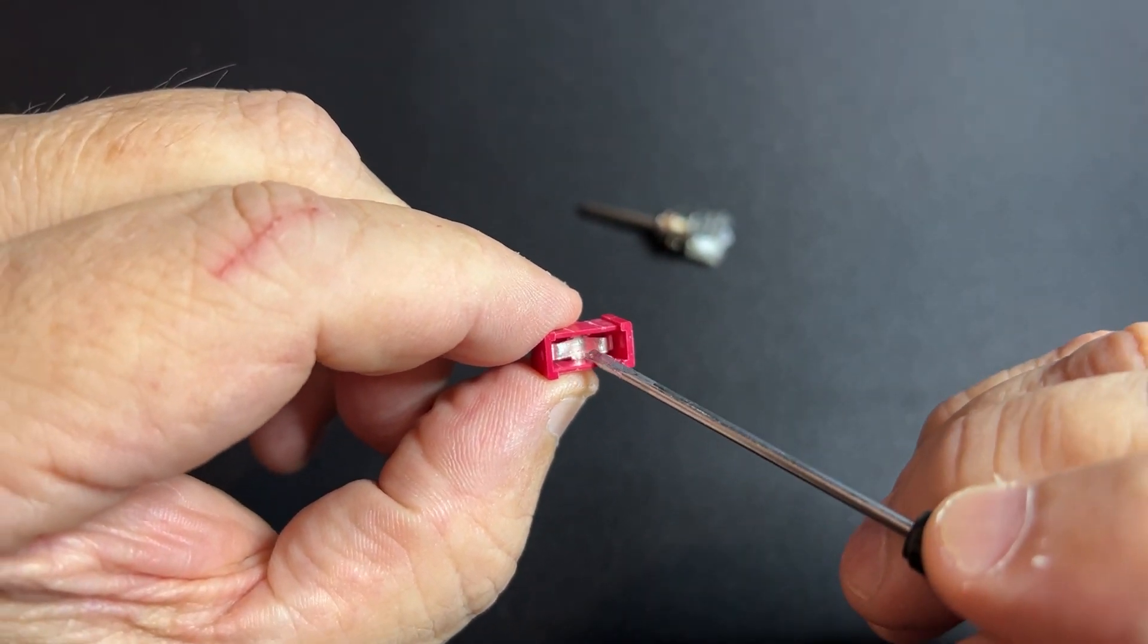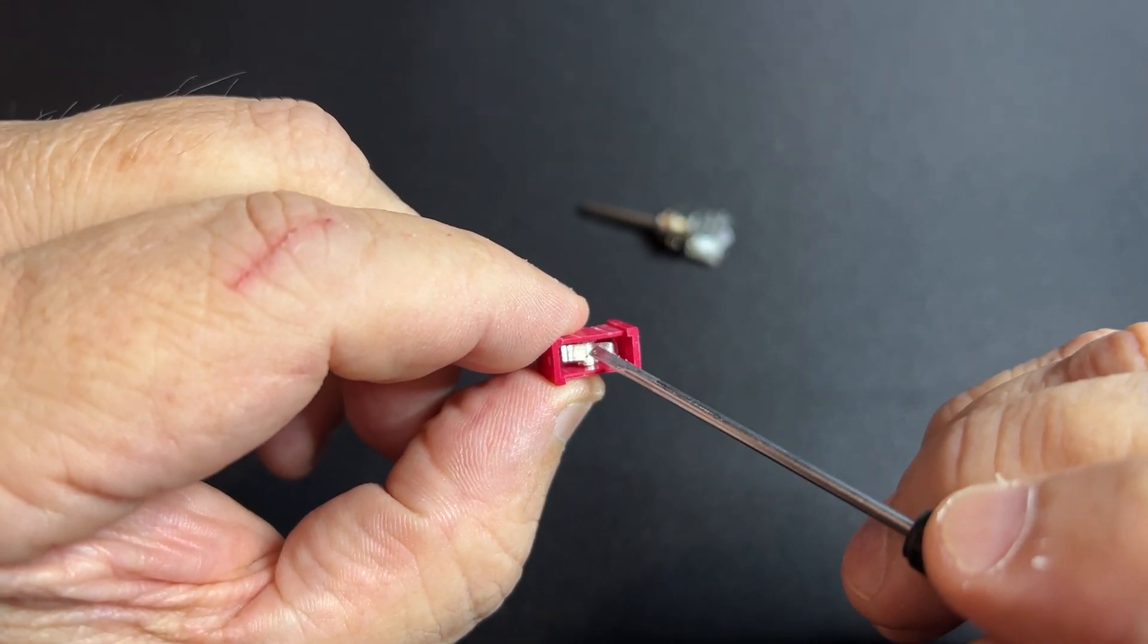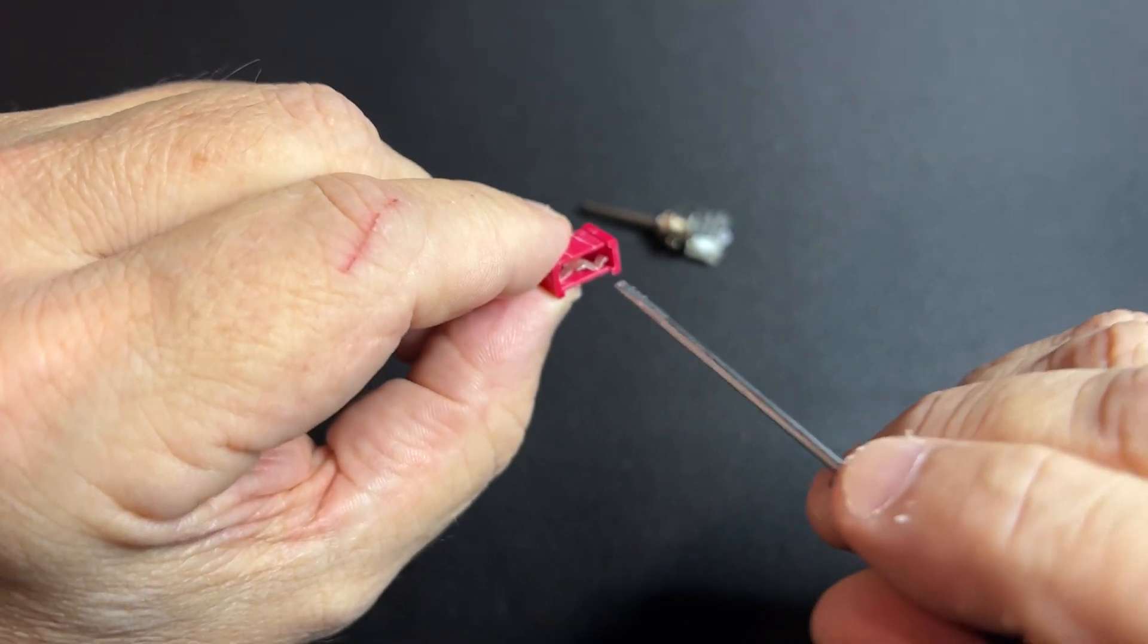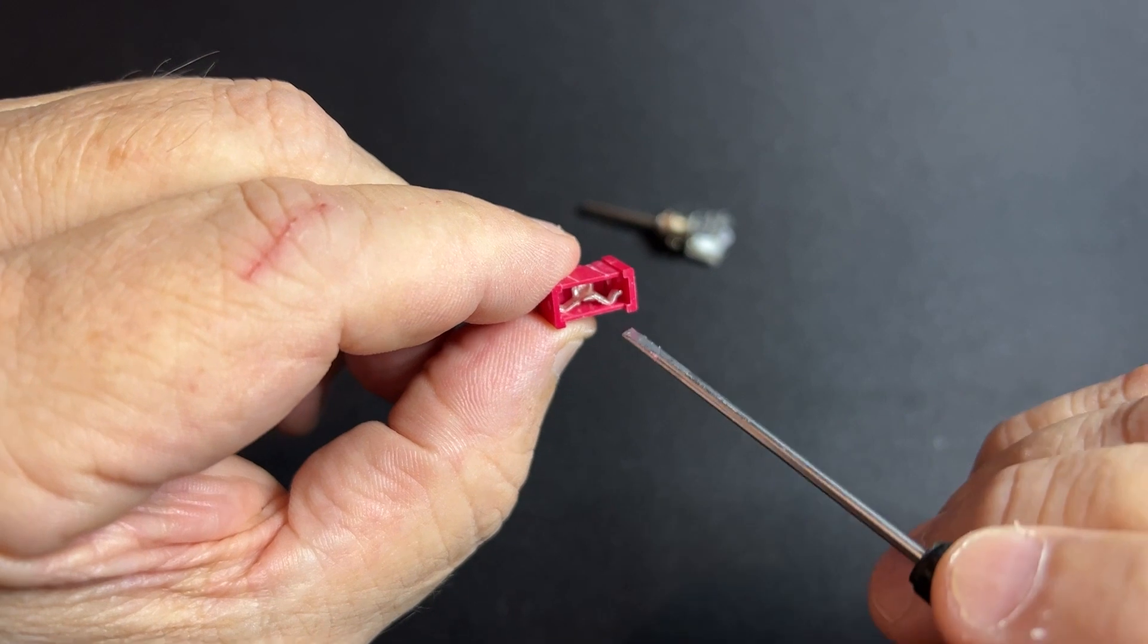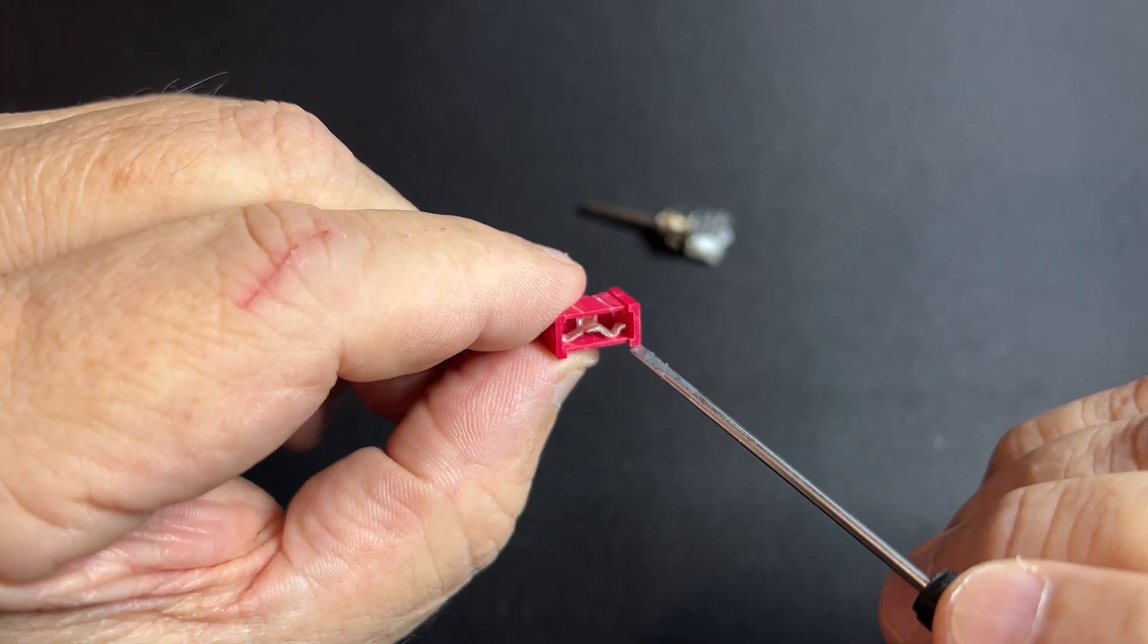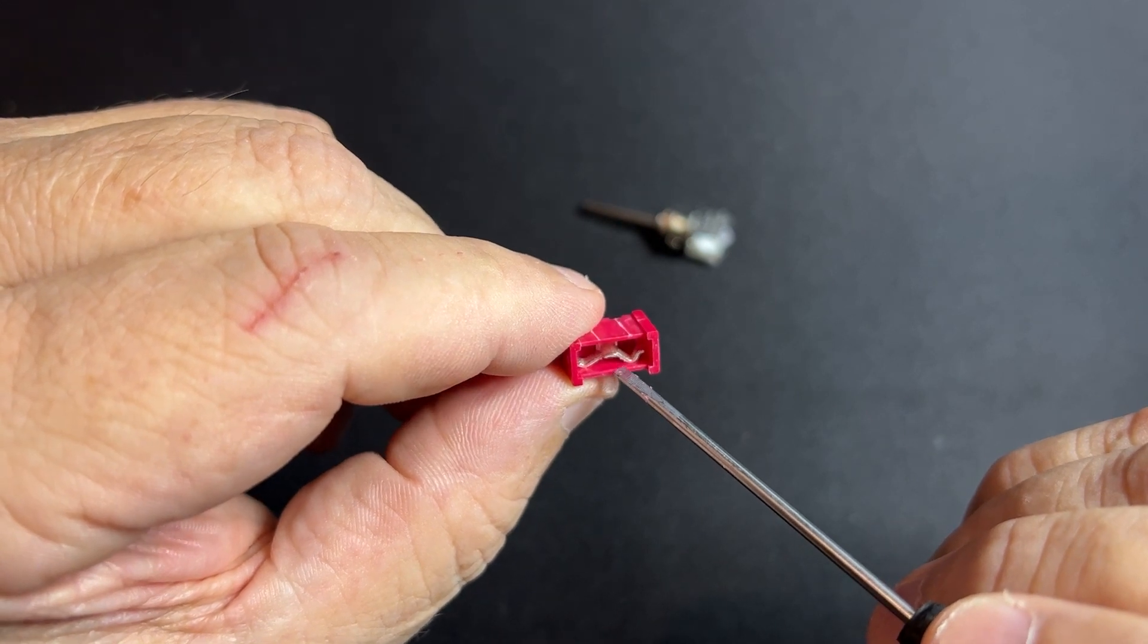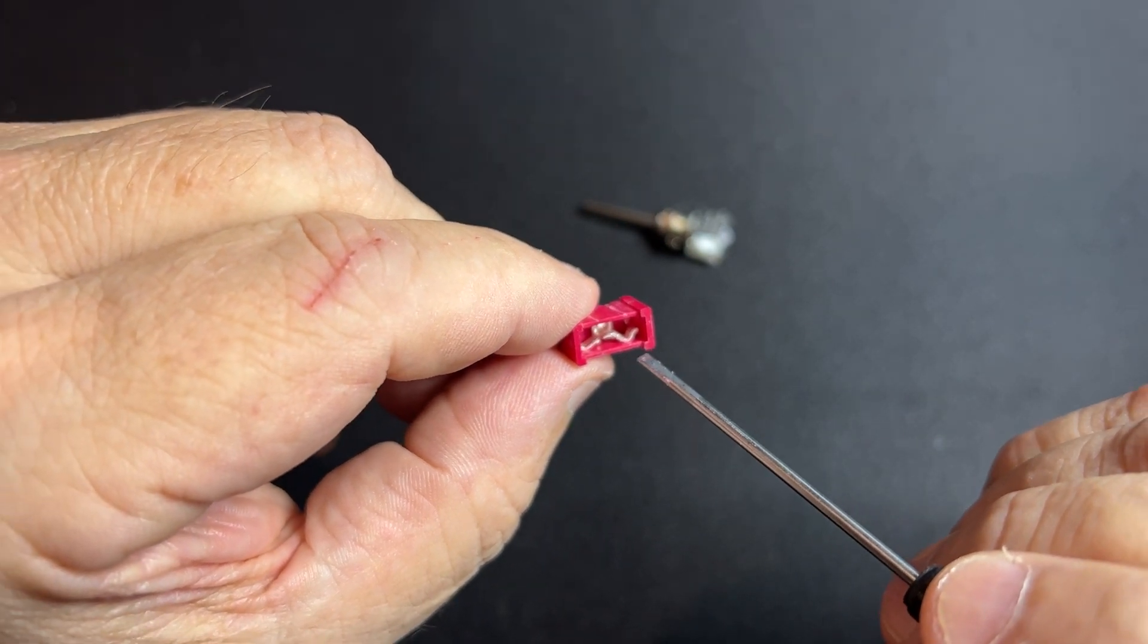This is the lever, and the difference between this one and the regular switch is that this lever has an extra bend there. So what you have to do to make it work is you simply take that off.